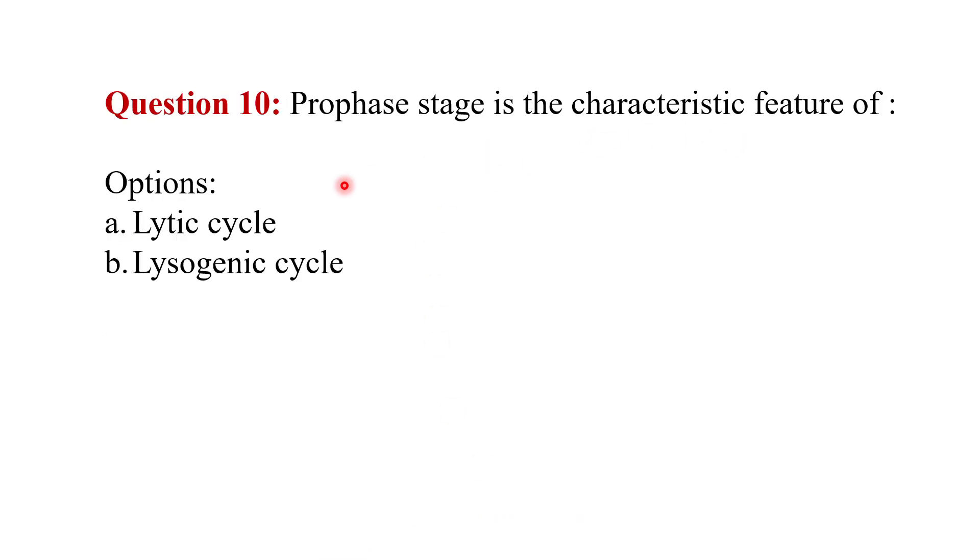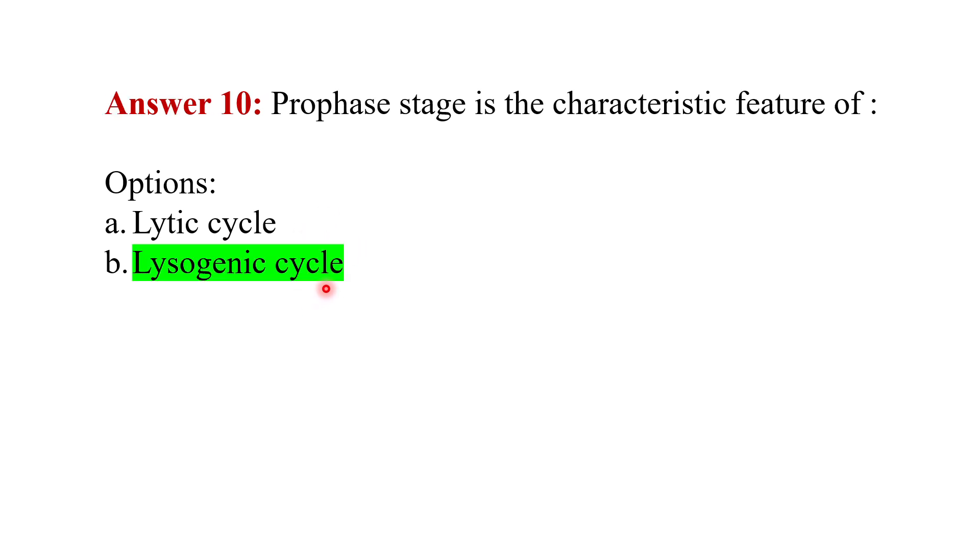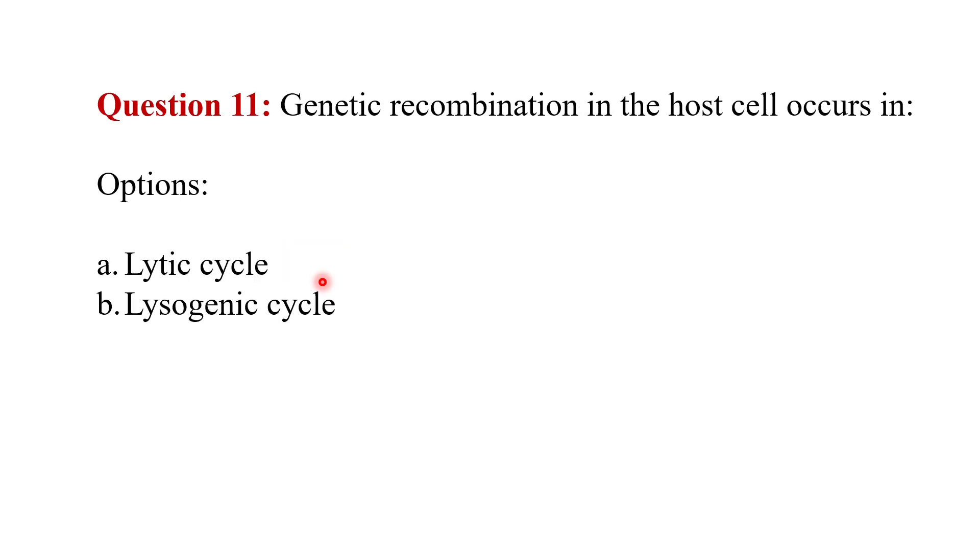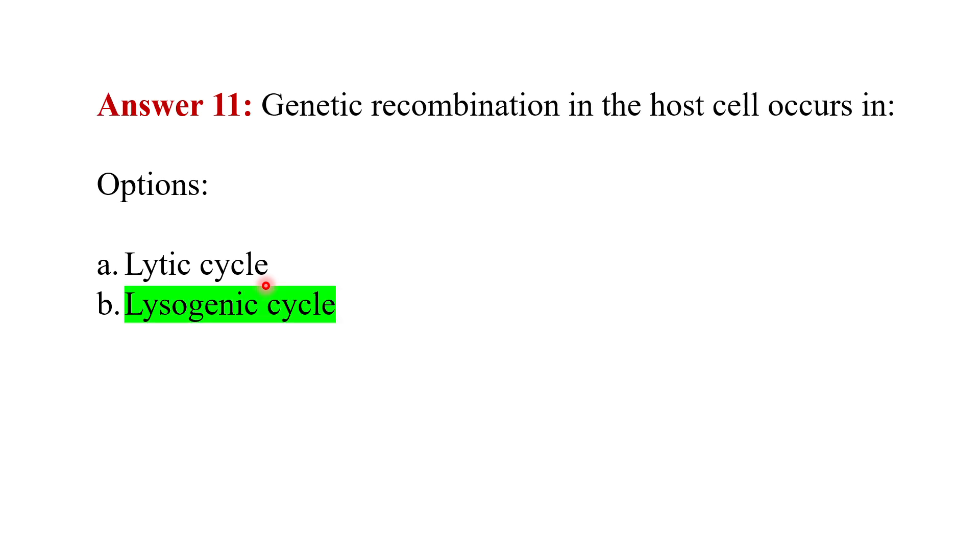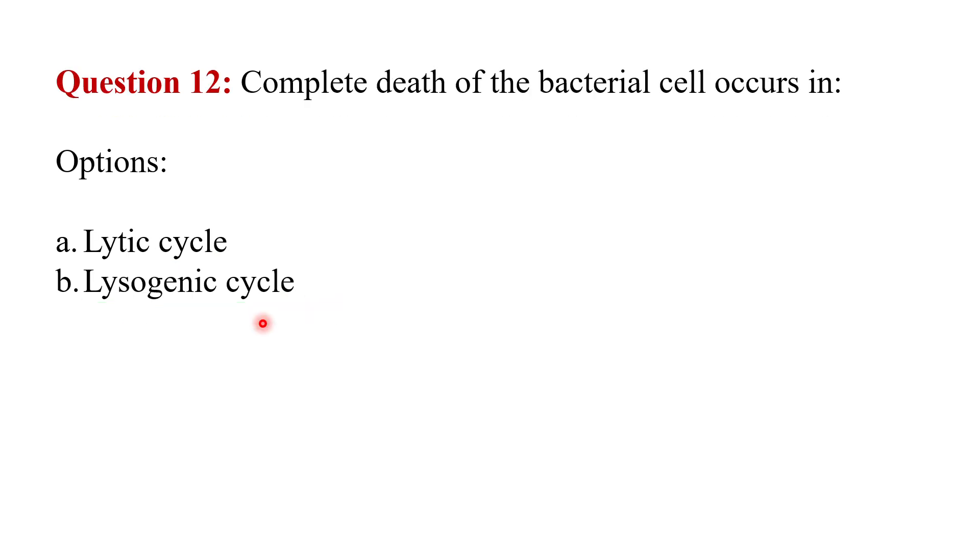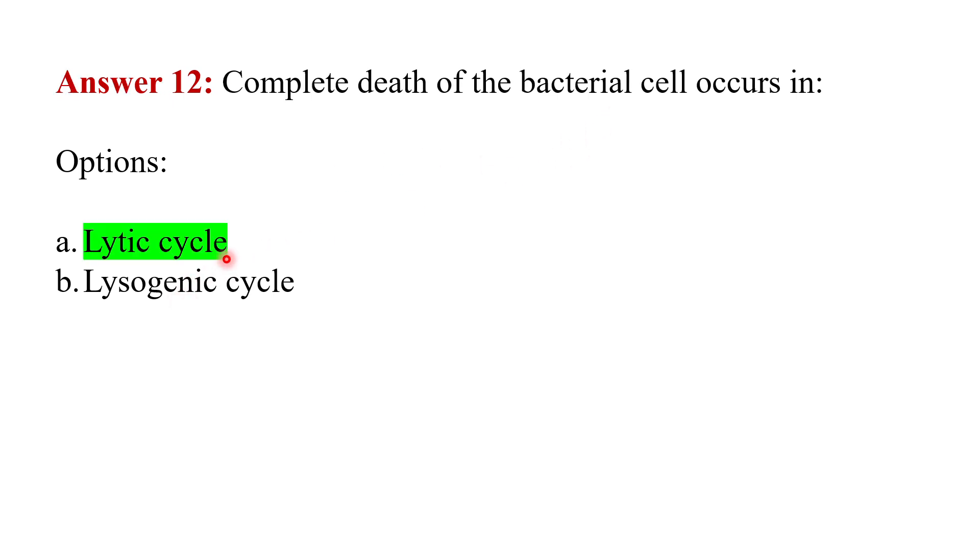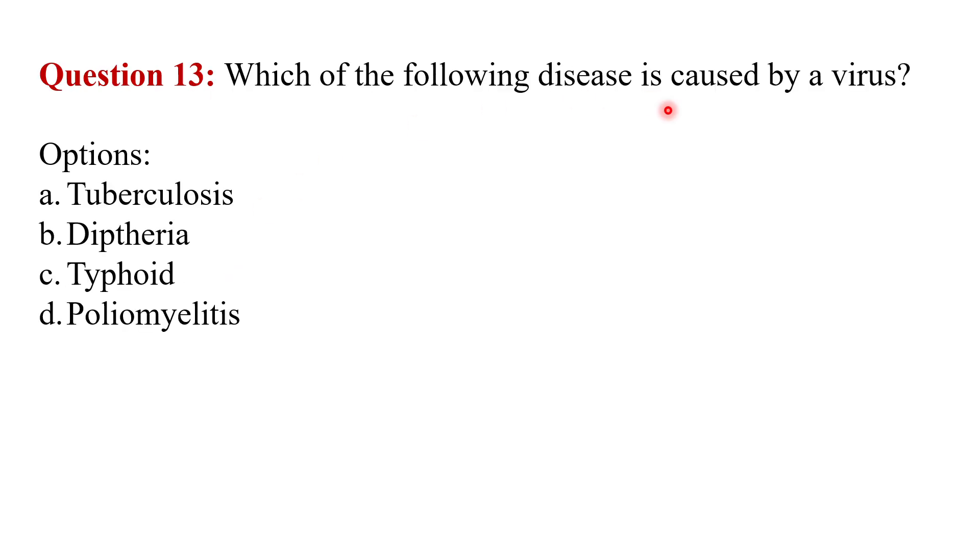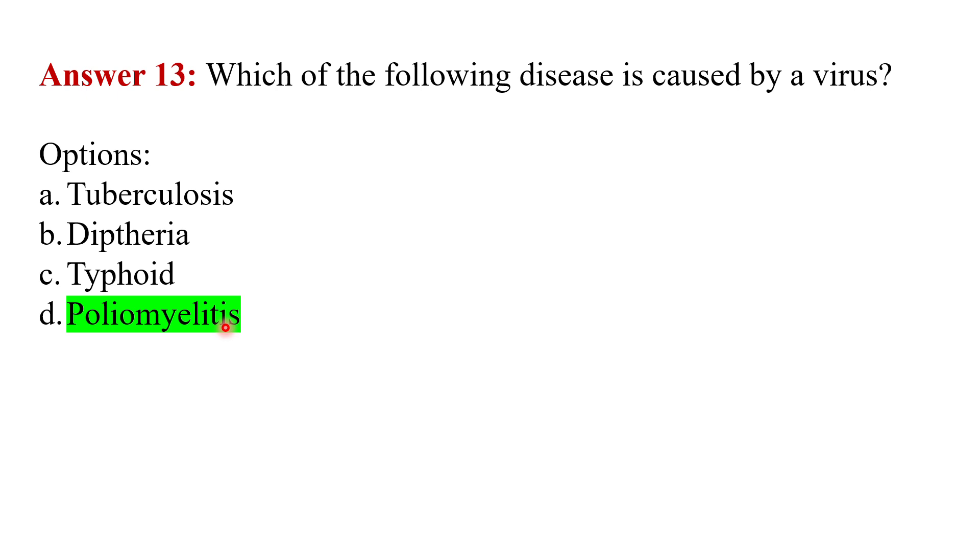The next question is: prophase is the characteristic feature of what? Lytic cycle or lysogenic cycle? The answer is lysogenic cycle. Genetic recombination in the host cell occurs in which cycle? The answer is lysogenic cycle. Complete death of the bacterial cell occurs in which cycle? The answer is lytic cycle. Which of the following diseases is caused by a virus: tuberculosis, diphtheria, typhoid, or poliomyelitis? The answer is poliomyelitis.